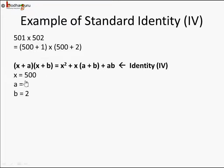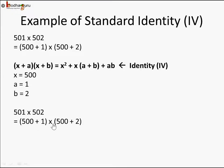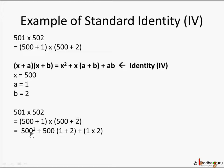We can use this law where x is 500, so (x + a) means a is 1, and (x + b) means x has to be the same 500 in both multiplicand and multiplier. So 500 + 1 into 500 + 2: a becomes 1, b becomes 2. We can rewrite it and solve. We know Identity 4 applies since it is of the form (x + a)(x + b). So we write the right-hand side: x² = 500², plus x(a + b) = 500(1 + 2), plus ab = 1 × 2.